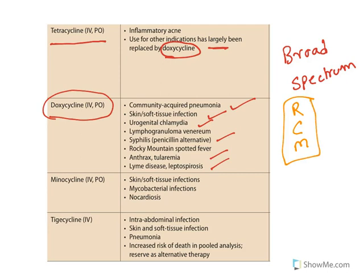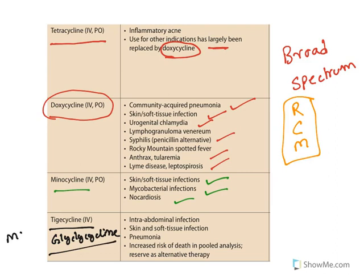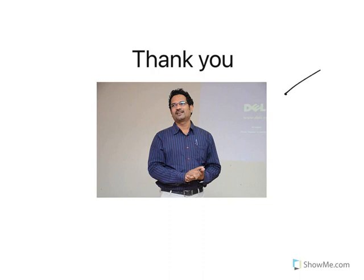Minocycline is used to treat skin and soft tissue infections, mycobacterial infections, and nocardiasis. There is also tigecycline — a glycylcycline — which is similar to tetracycline with a very similar mechanism of action. It also binds at 30S and blocks incoming tRNA. It is used to treat abdominal infections, skin and soft tissue infections, and pneumonia. This concludes the discussion on aminoglycosides and tetracyclines. Thank you for watching.